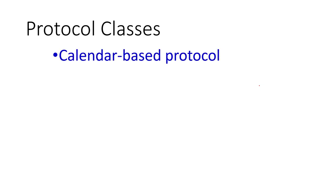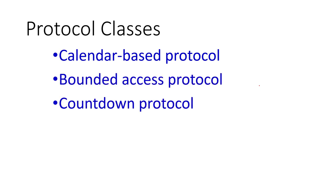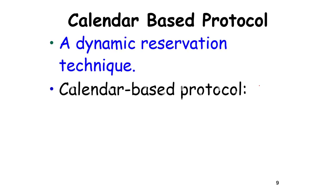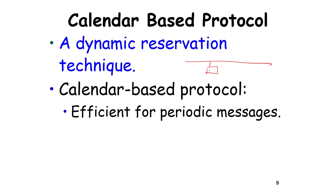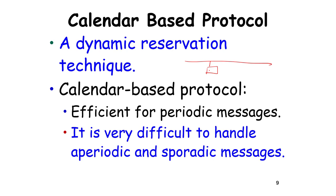Global scheduling is not the same as CPU scheduling. Simple networks like CAN buses use it, but we should look at bounded access and calendar-based protocols. These include the countdown protocol, virtual time protocol, and others. The calendar-based protocol uses a dynamic reservation technique, assuming all nodes on the bus are known a priori, and works efficiently for CBR settings where messages are periodic.